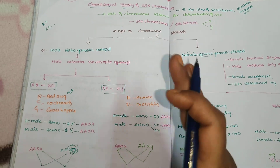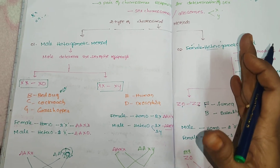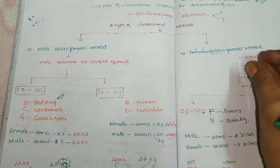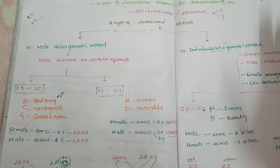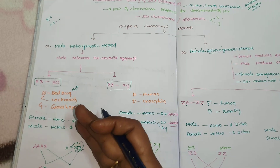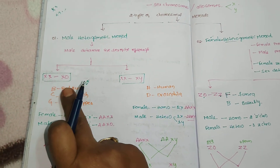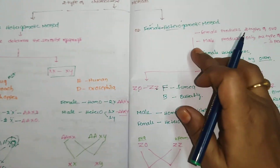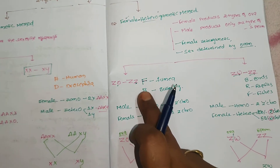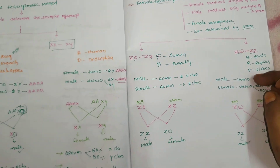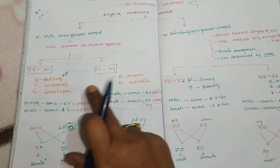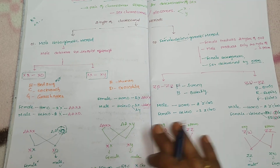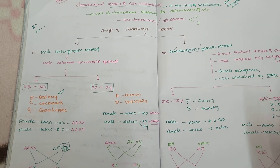To summarize, you need to focus on the heterogametic sperm or ova — the dissimilar sexes decide the sex of the offspring. Remember: XO type — BCG (Bedbug, Cockroach, Grasshopper); XY type — HD (Human, Drosophila); ZO/ZZ type — FB (Fowl, Butterfly); ZW/ZZ type — BRF (Birds, Reptiles, Fishes). Remember the karyotype and examples for male and female heterogametic. This chart helps you write the long-answer question and also solve MCQs for M-set and NEET.